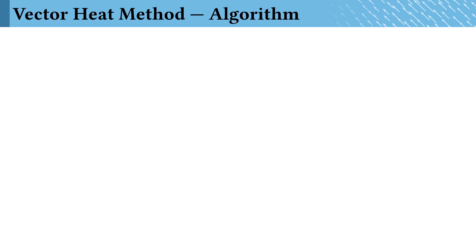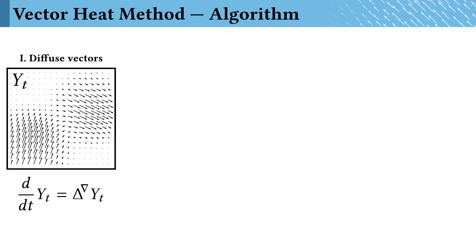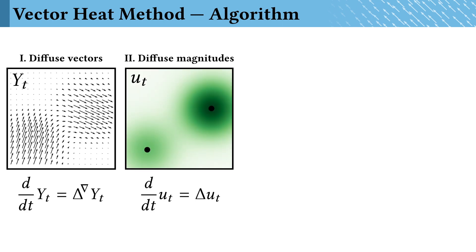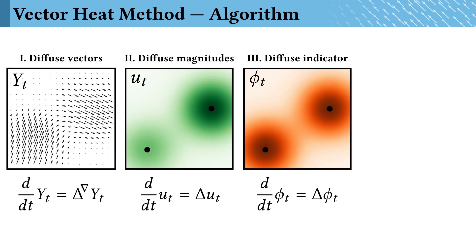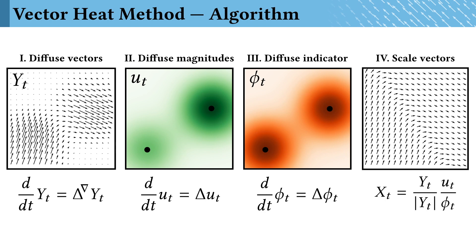So that's it. The vector heat method amounts to four steps. First, diffuse your input vectors, then diffuse their magnitudes, and diffuse an indicator function at the source locations. And finally, combine the results.